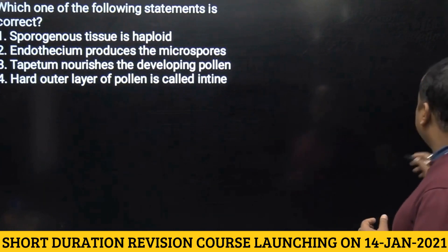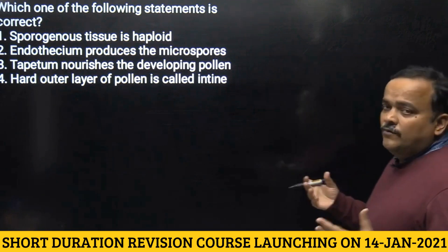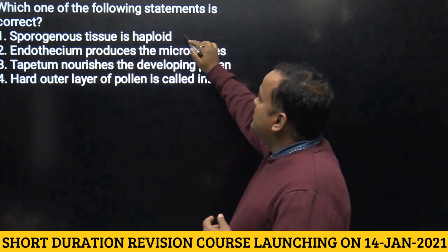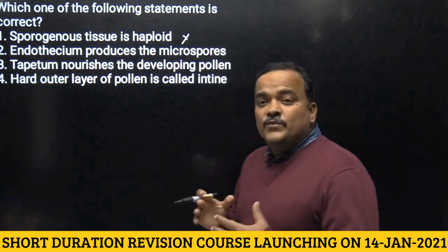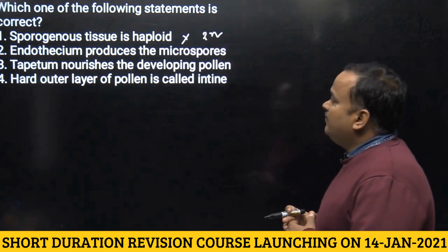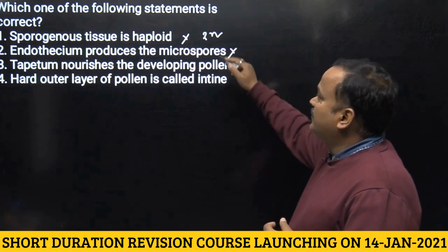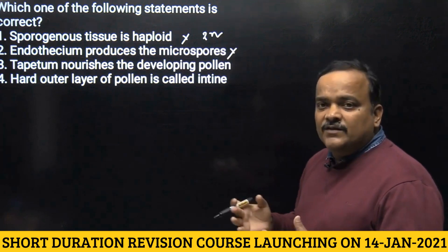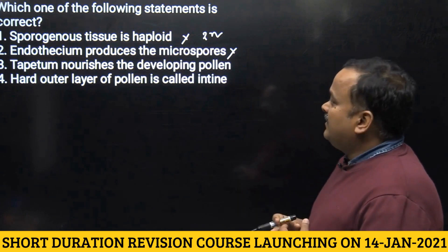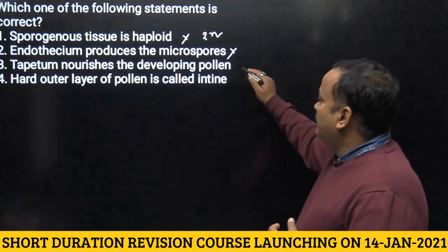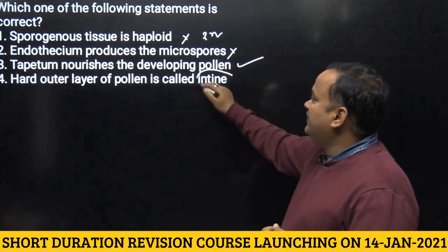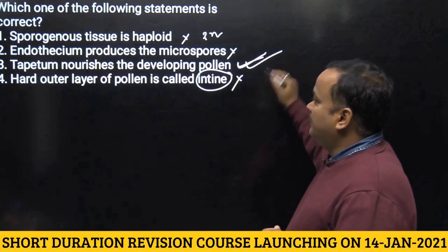The next question asks which statement is correct. First: sporogenous tissue is haploid — not correct, it is diploid. Second: endothecium produces the microspore — also not correct, microspores are produced by the pollen mother cell, which is the sporogenous tissue. Third: tapetum nourishes the developing pollen — this is correct. Fourth: the hard outer layer of pollen is called endine — not correct, it is called exine. So the answer will be the third option.